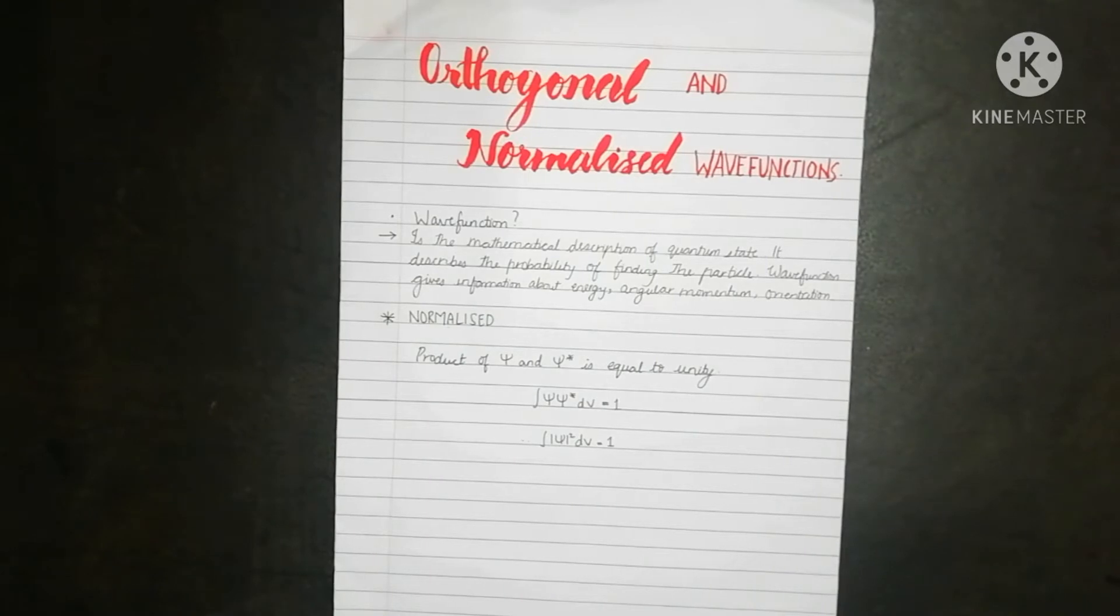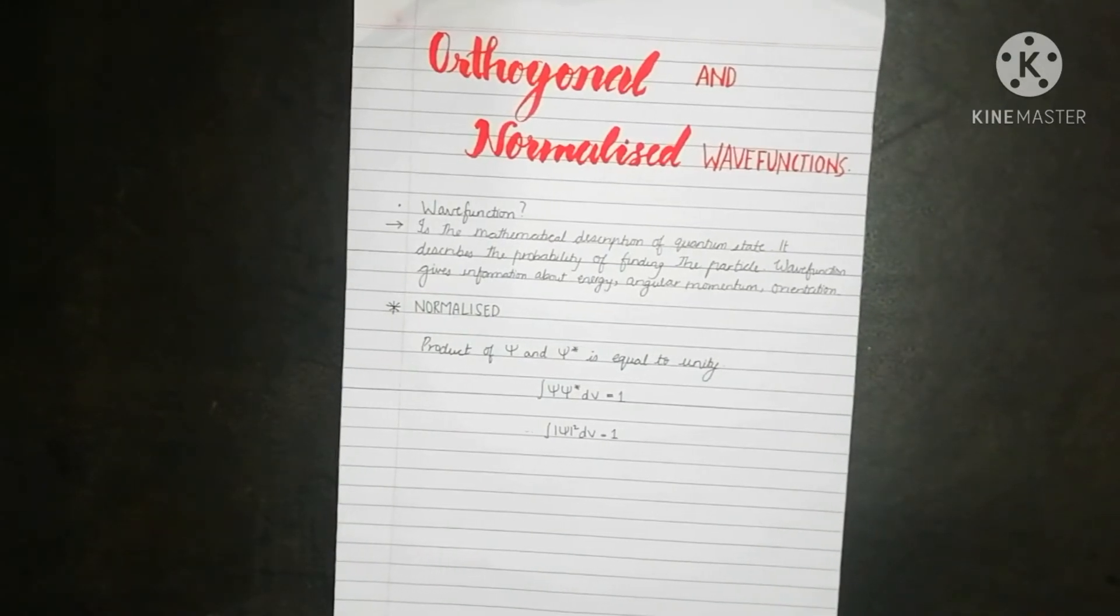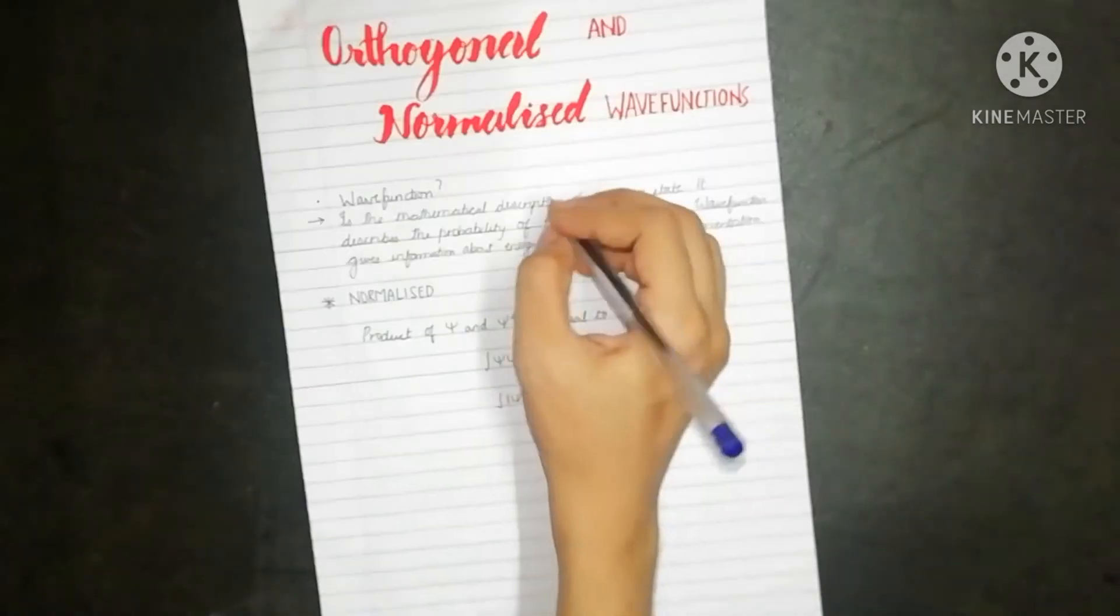Hello everyone, welcome to the channel Simple Science. Today in this video we will learn the difference between orthogonal and normalized wave functions. But before that, we need to know what is a wave function. Wave function is represented by the letter psi.